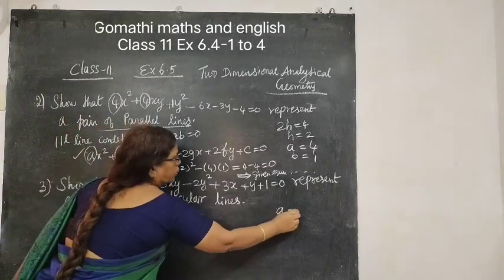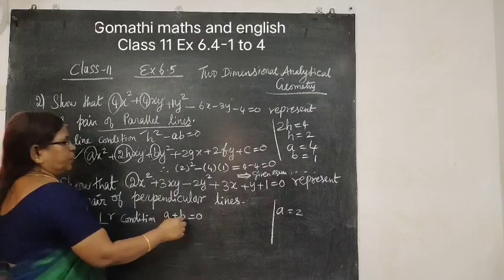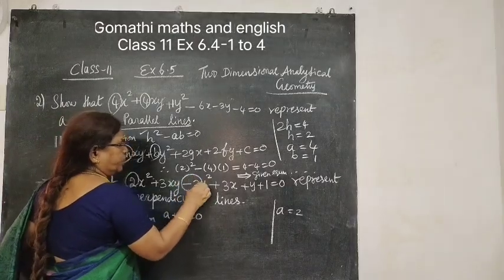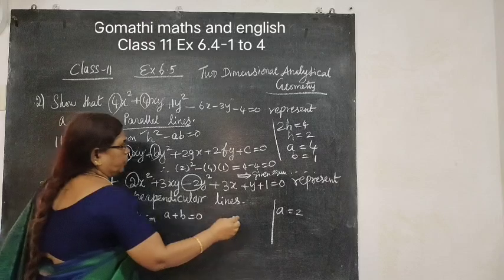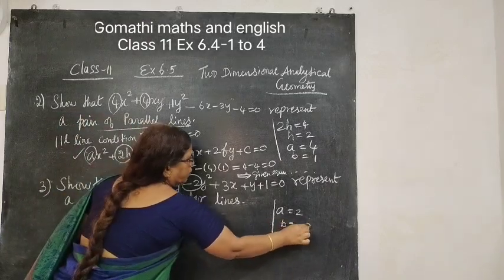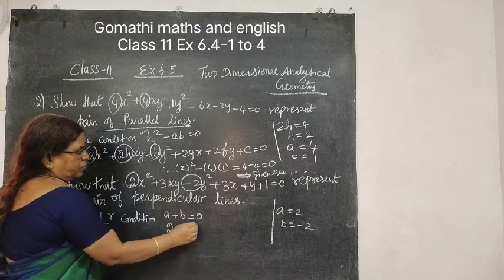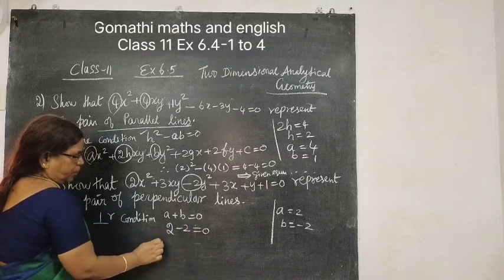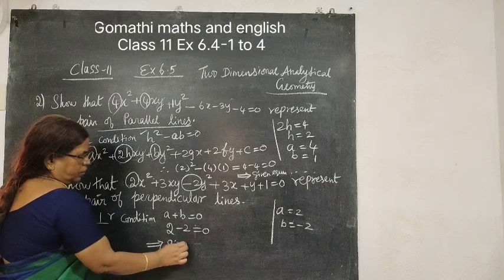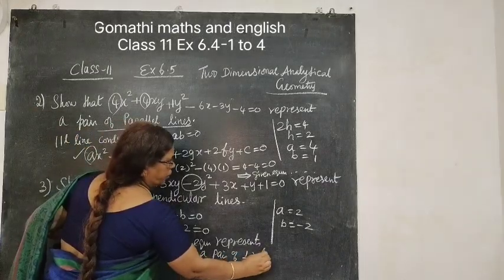Then what is B? This is B, Y squared coefficient. Compare with here, so B equal to minus 2. So A plus B is 2 plus minus 2 equal to 0. Which implies given are perpendicular lines.